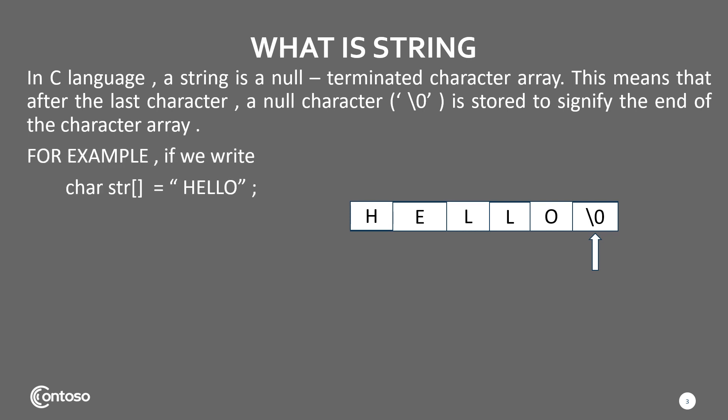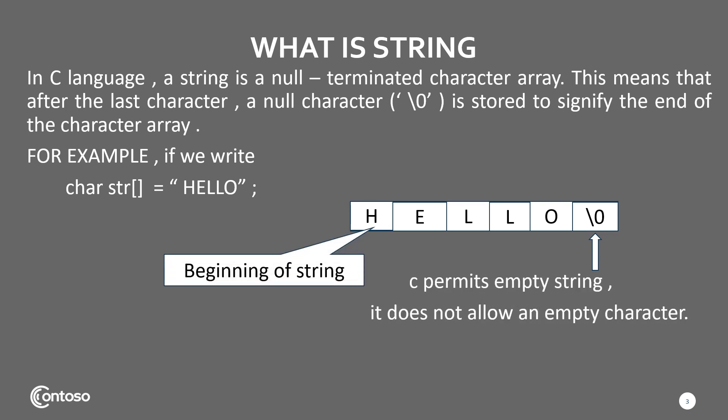For example, if we write char str equals hello, then in the memory it will occupy the space like H E L L O where beginning of the string is from H, end of the string is backslash 0, which is the null character. C permits empty string, it does not allow an empty character.